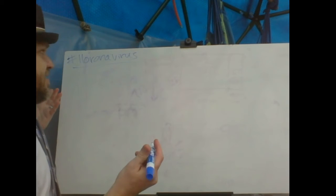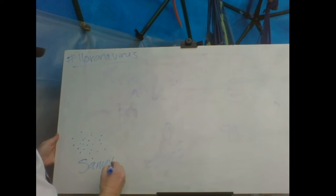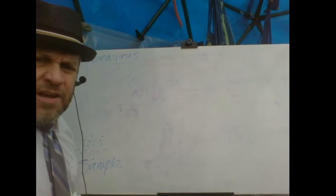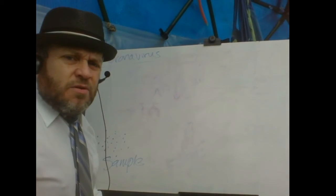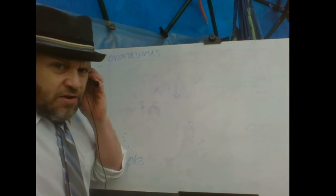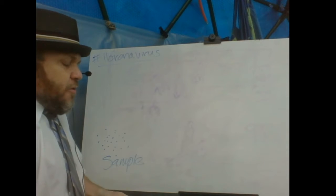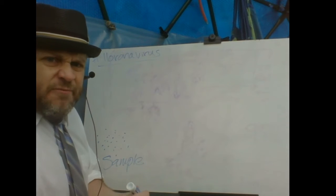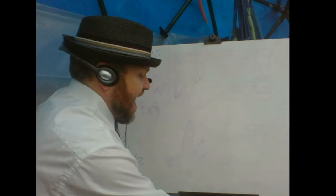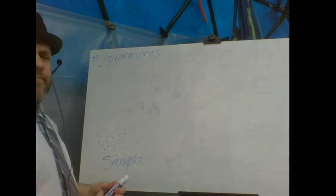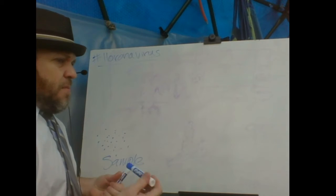What we got is a sample of 25 flight attendants. 1, 2, 3, 4, 5, 6, 7, 8, 9, 10, 11, 12, 13, 14, 15, 16, 17, 18, 19, 20, 21, 23, 24, 25. So this is our sample here. We just grabbed them off airplanes. We're just all like, hey man, there's a Urona virus. You got to come in. You got to figure it out.